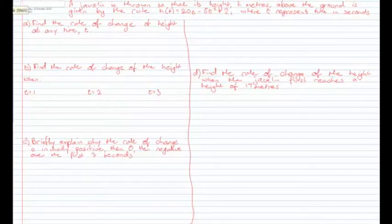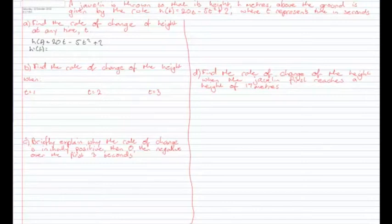Let's do part A first: find the rate of change of height at any time t. This means find the gradient or differentiate. We have h(t) = 20t − 5t² + 2. Differentiating, h'(t): 20t differentiates to just 20. 2 times negative 5 is negative 10, drop the power by 1, giving −10t. And the constant positive 2 differentiates to nothing. So h'(t) = 20 − 10t.